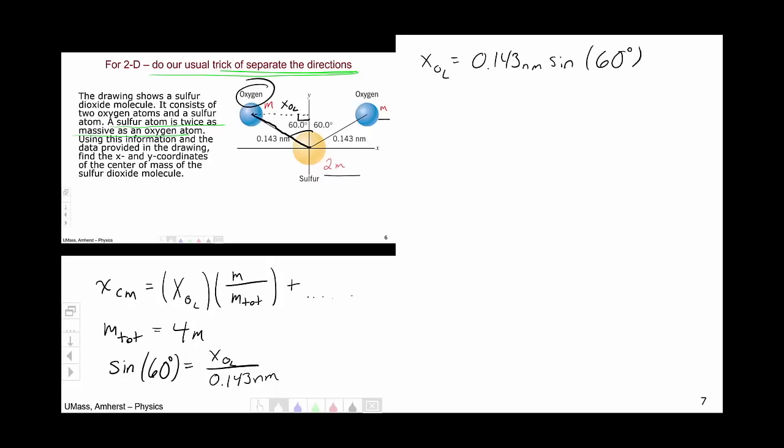Which means that x_OL is going to be 0.143 nanometers sine of 60 degrees, which when I plug that into a calculator, I get 0.124 nanometers. Is this the value we want, however? No.